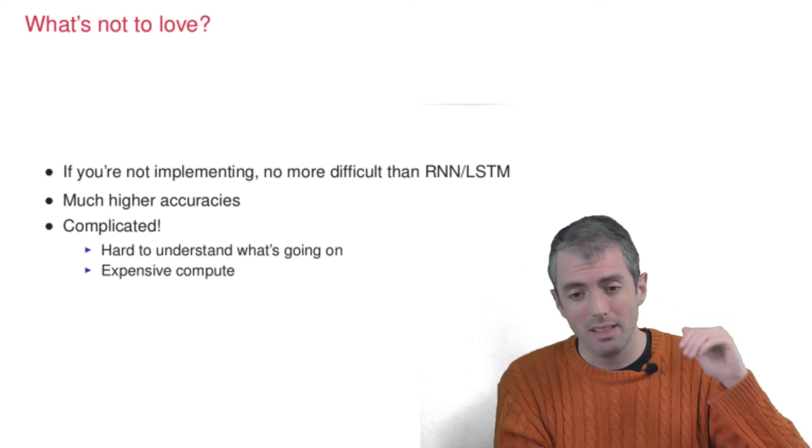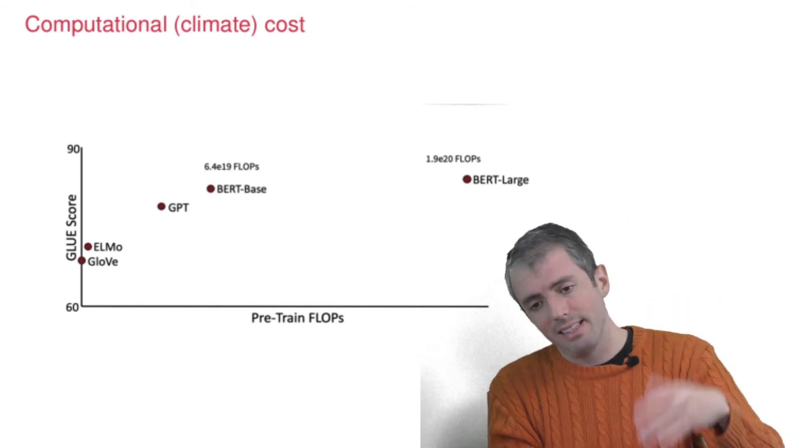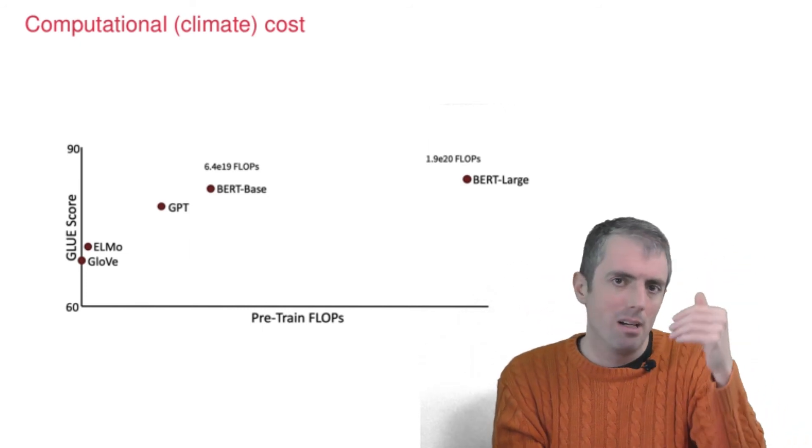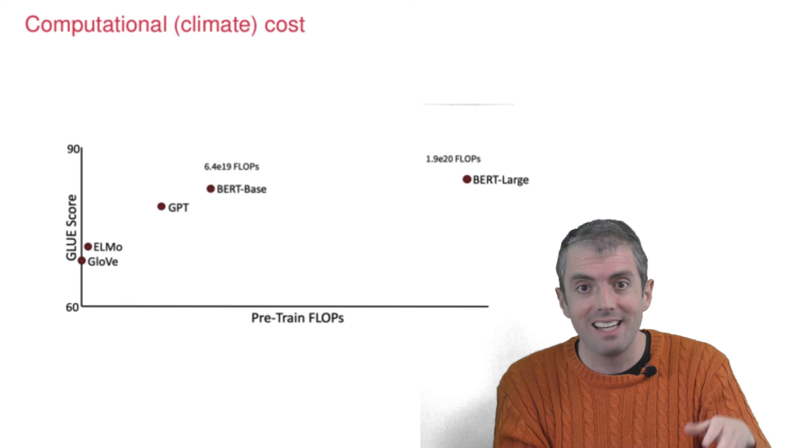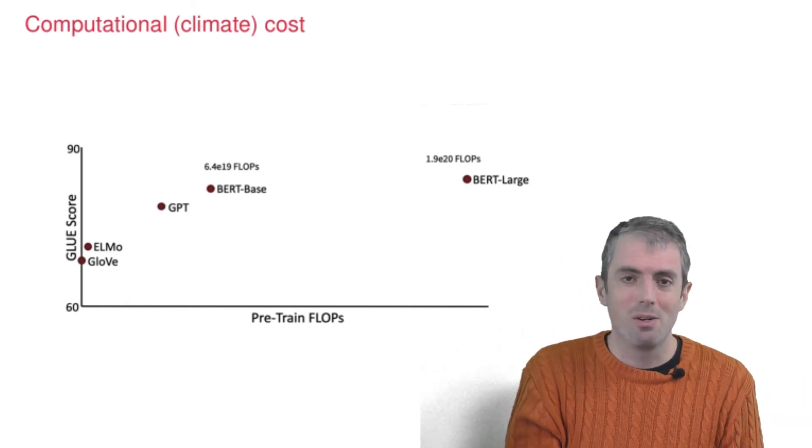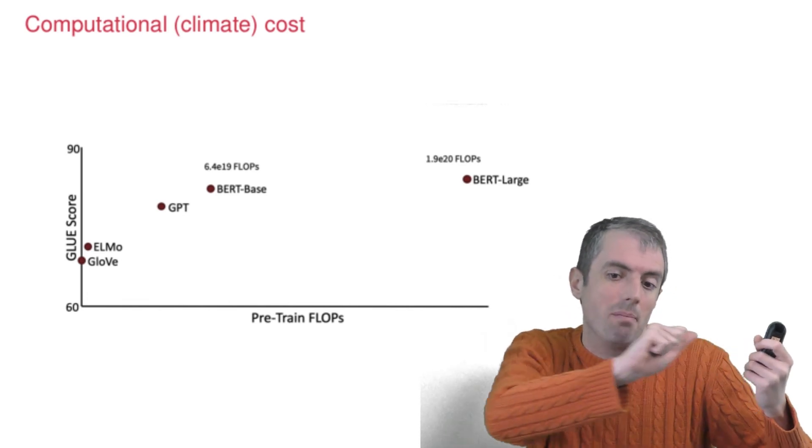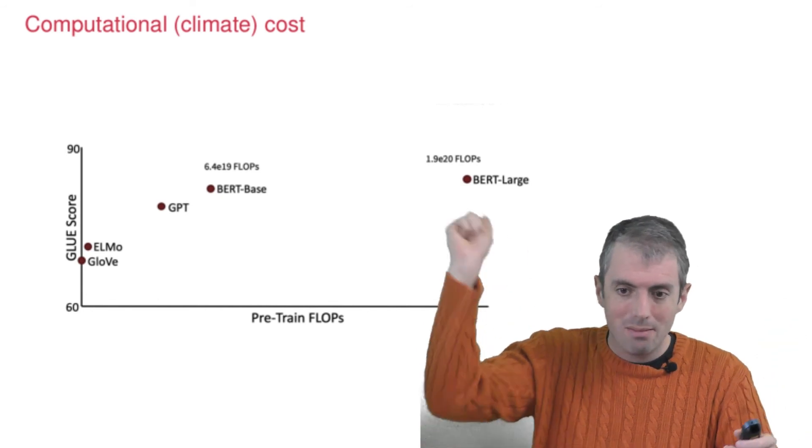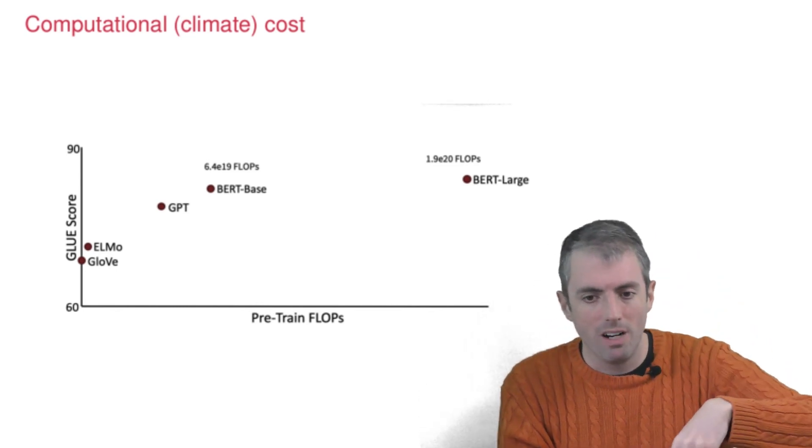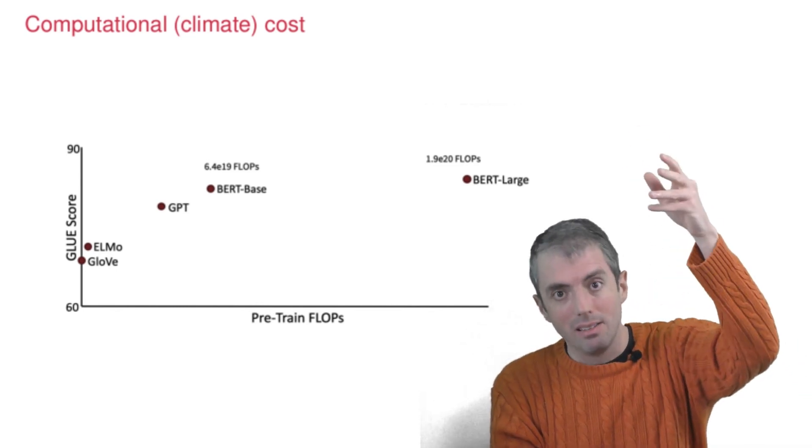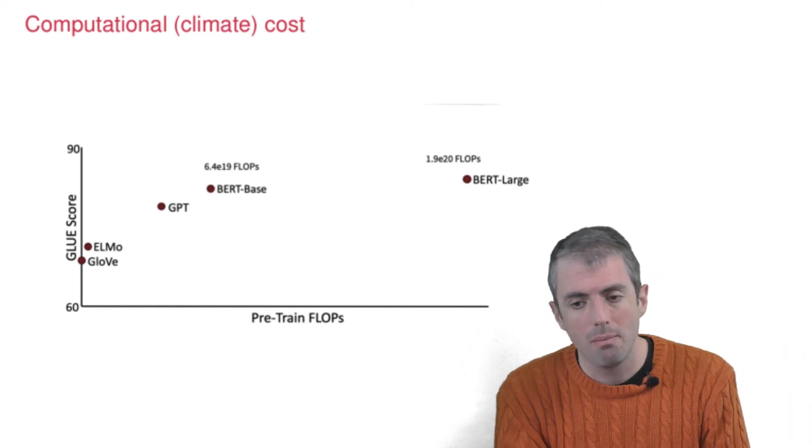And the computation is super expensive. So here we have a graph where the y-axis is performance on a task. The specific performance numbers aren't that important. You could swap out this task for many other tasks. It would look the same. Neural language models are doing better than anything else. The x-axis is how much computational power you need to get that performance.